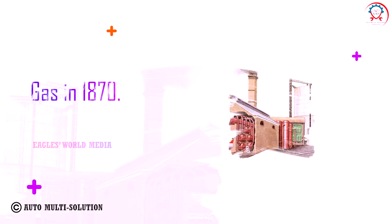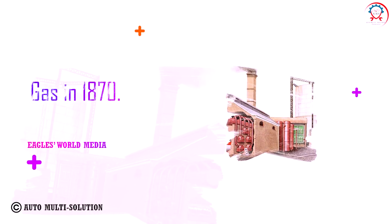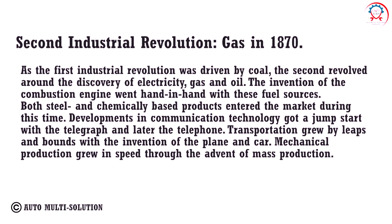Second industrial revolution — gas, 1870: As the first was driven by coal, the second revolved around electricity, gas, and oil. The invention of the combustion engine went hand in hand with these fuel sources. Both steel and chemically based products entered the market. Developments in communication got a jump start with the telegraph and later the telephone. Transportation grew with the invention of the plane and car, and mass production increased manufacturing speed.